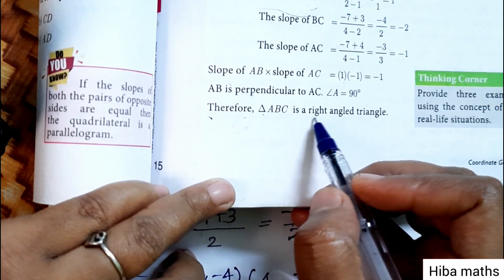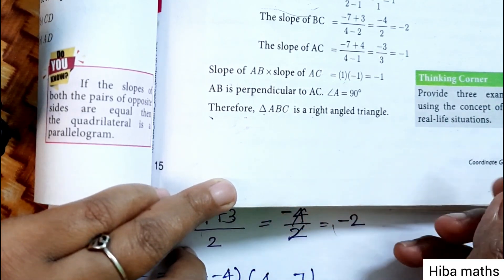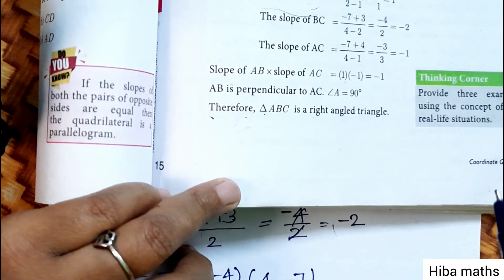Therefore, triangle ABC is a right-angled triangle. Thank you so much for watching.